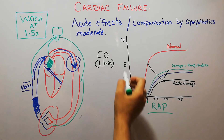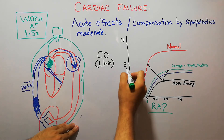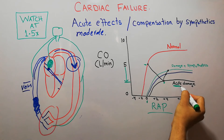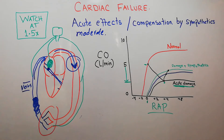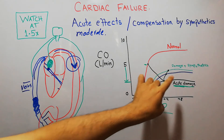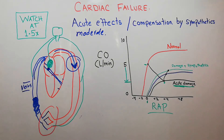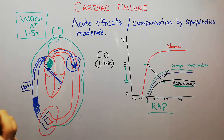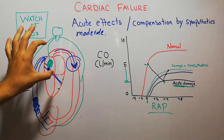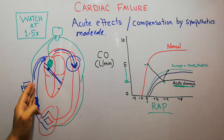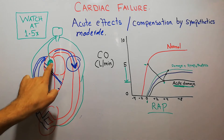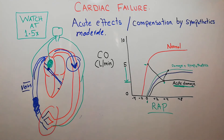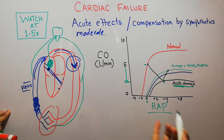The cardiac output falls from the normal level to the new, lower level shown on the black graph. Simultaneously, because blood cannot be pumped out and more blood from the veins cannot enter the heart, right atrial pressure increases slightly — from zero to approximately +4 to +5 mmHg. The red graph represents normal cardiac output and the black graph represents the damaged heart's output.